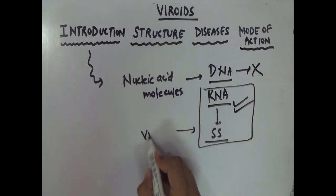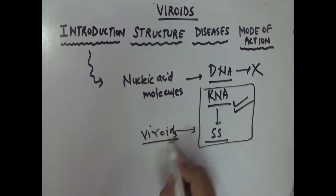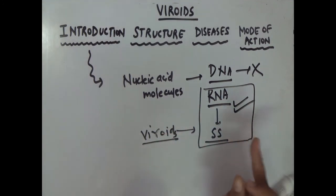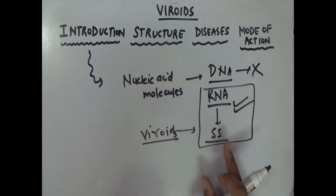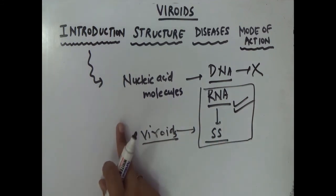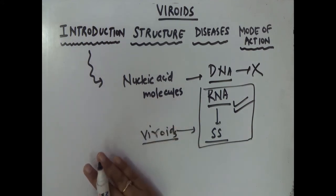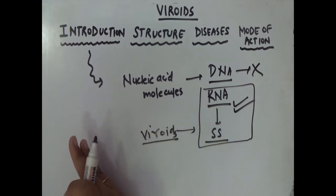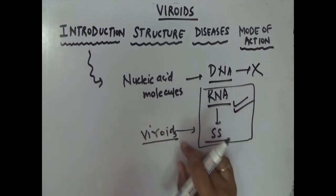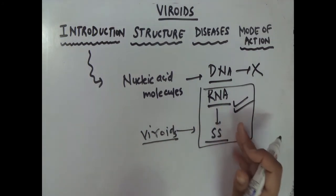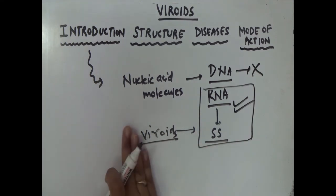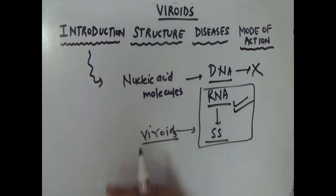Viroids resemble viruses in their biochemistry because viruses are made up of nucleic acid and proteins. If we remove proteins from viruses, or if viruses undergo mutations and proteins are removed, then viruses get converted into viroids. So single-stranded RNA viruses can be converted into viroids.